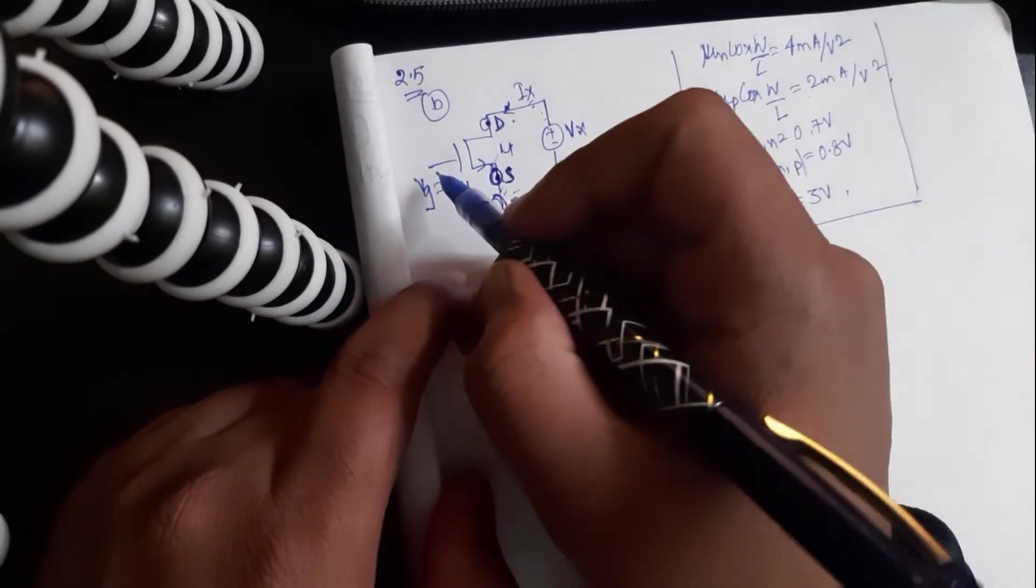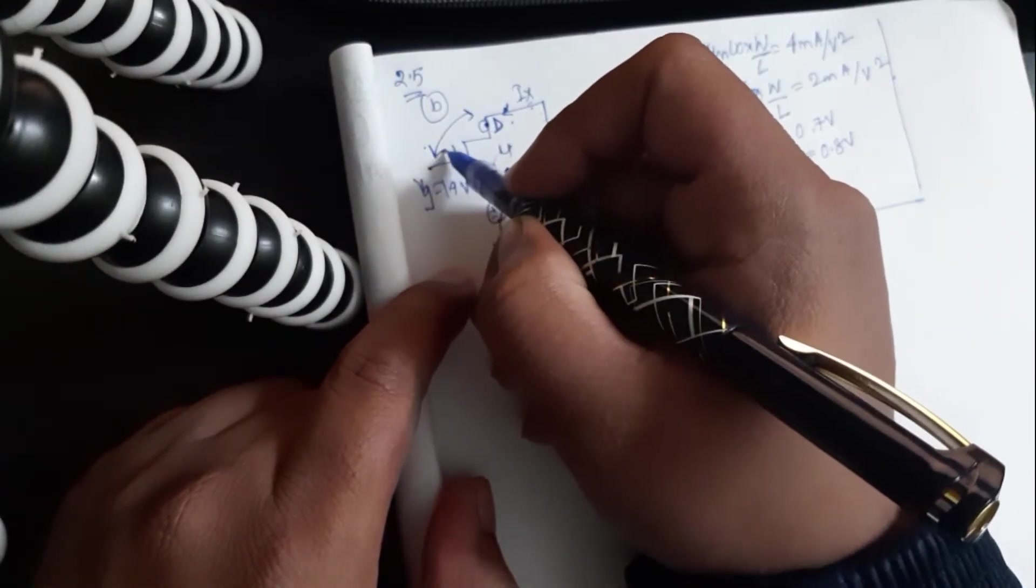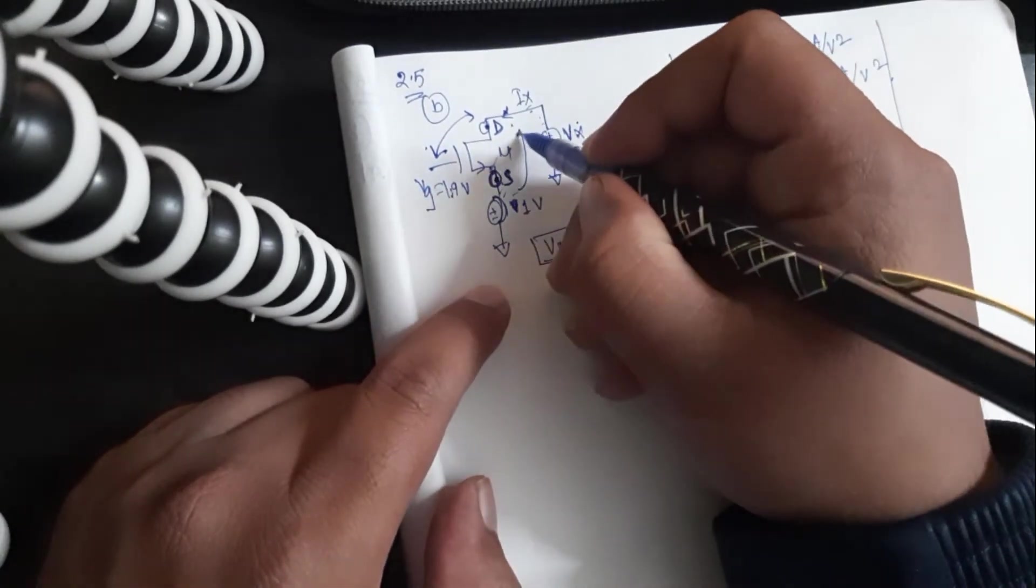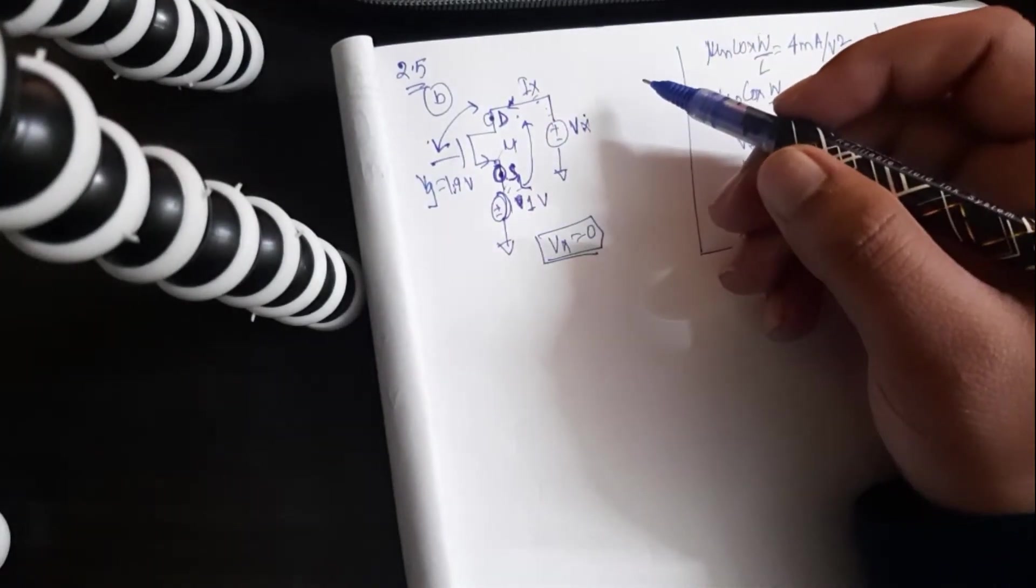In that case, Vgs will be this voltage, which is 1.9 volts minus 0 volts. Vds will be this voltage, which is 1 volt.